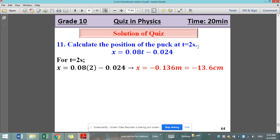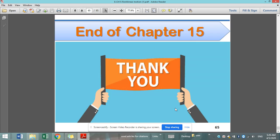Calculate the position of the puck at T equal to 2 seconds. We corrected it. X equals 0.08T minus 0.024. For T equal to 2 seconds, we substitute for 2. And having the speed in SI unit and the X0 in SI unit, so X is going to be in SI unit, of course, substituting time in SI unit. So X is equal to minus 13.6 centimeters after 2 seconds.